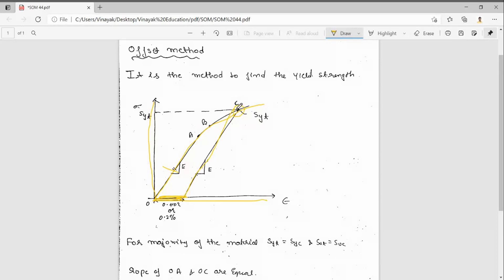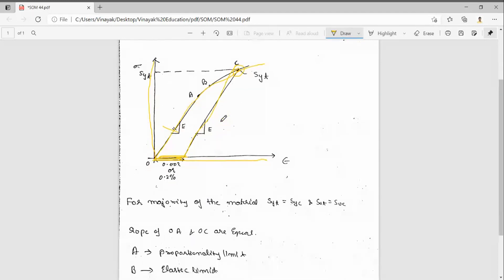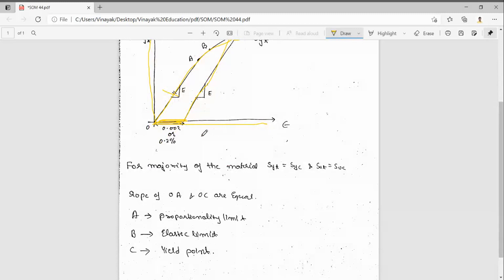Wherever this line cuts, that is the SYT, the yield strength of that material. For ductile materials, for the majority of materials, SYT equals SYC, or SUT equals SUC.